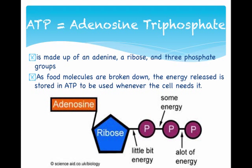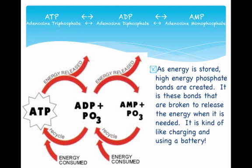As food molecules are broken down, you start making ATP — adenosine triphosphate. The way that works is you have adenosine diphosphate (ADP), and what happens is a phosphate group is added to the ADP, making it adenosine triphosphate.